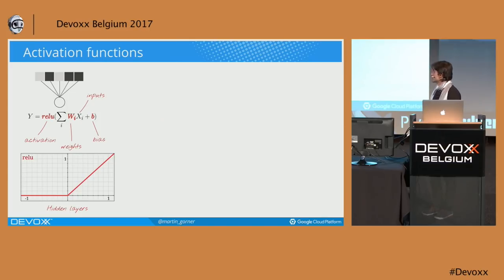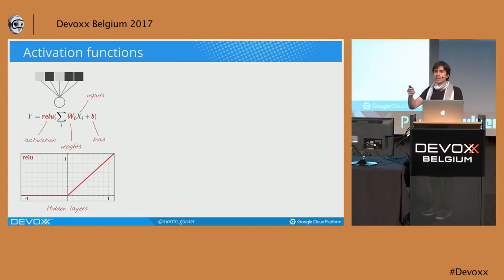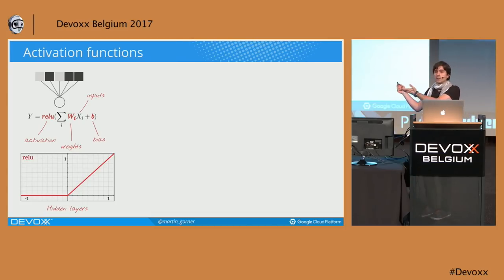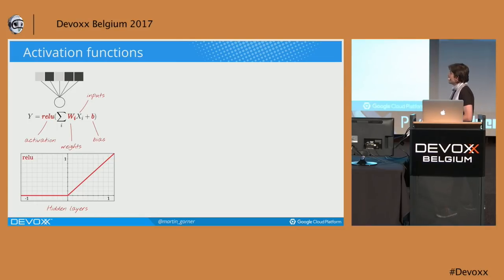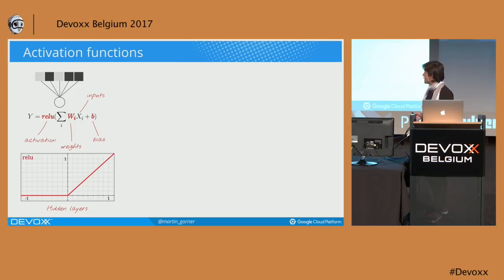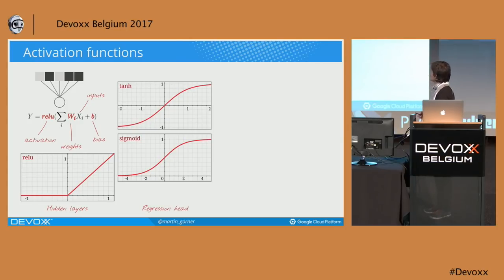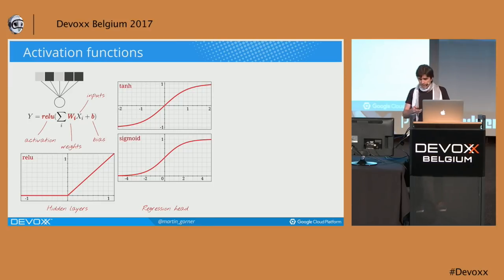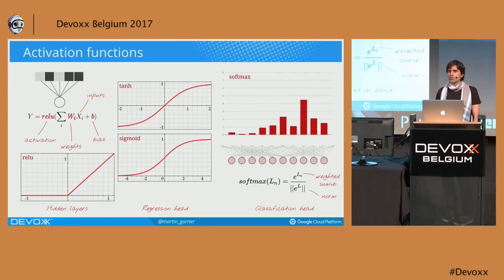This is the ReLU function. It's a really very simple function: identity for all positive values and zero for all negative values. It's non-linear — that's the only requirement for it to be used in a neural network. On the last layer, if you want to predict continuous values, you can use sigmoid functions: one between zero and one, the other between minus one and one.